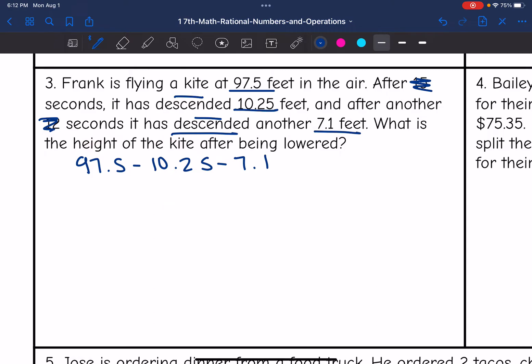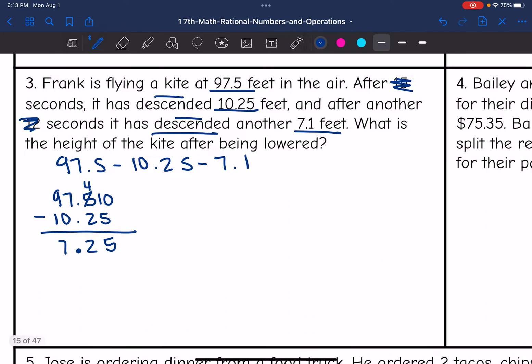We're going to do 97.5 minus 10.25 and then minus 7.1. I'm going to add an extra 0 there and I'll need to borrow. 10 minus 5 is 5, 4 minus 2 is 2, bring down the decimal, 7 minus 0 is 7, and 9 minus 1 is 8. So there's how high it is after the 10.25 feet it descended. Now it's going to descend another 7.1. So 5 minus 0 is 5, 2 minus 1 is 1, bring down the decimal, 7 minus 7 is 0, and bring down the 8. So after both of those descents, the kite will end up at 80.15 feet high.